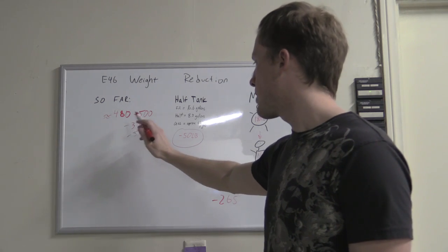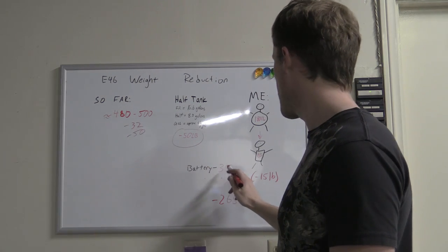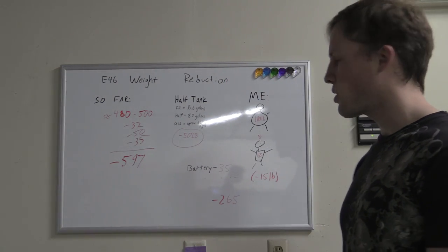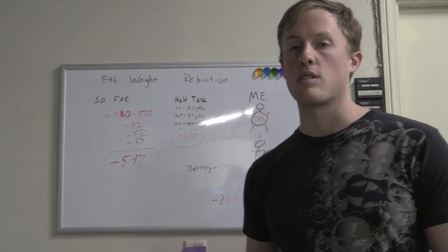Let's erase this and get a good figure here. Let's just use the low end: 480 plus 32 plus 50 plus 35 equals 597 pounds. So with just that stuff we're losing 597 pounds totally. And now we have to talk about the stuff we're gonna put back in the car.